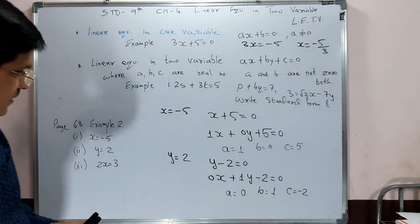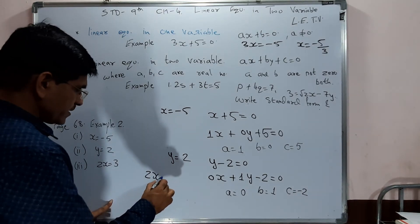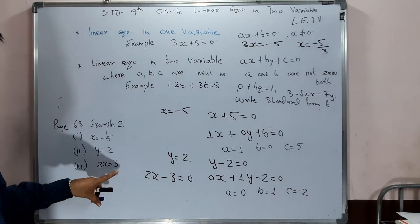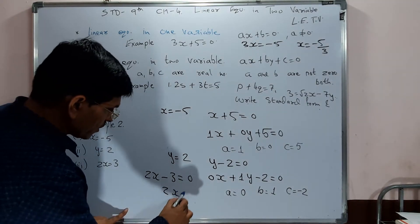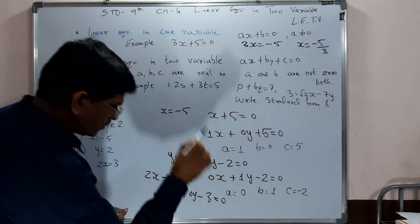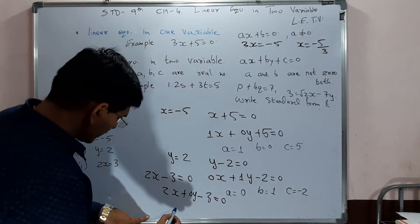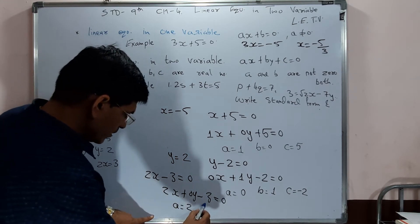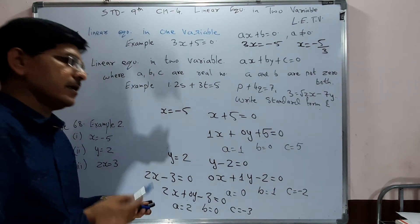Last sum: 2x + 3 — writing in standard form: 2x - 3 = 0. Since y is not present, we add 0·y. So: 2x + 0·y - 3 = 0. Therefore a = 2, b = 0, and c = -3.